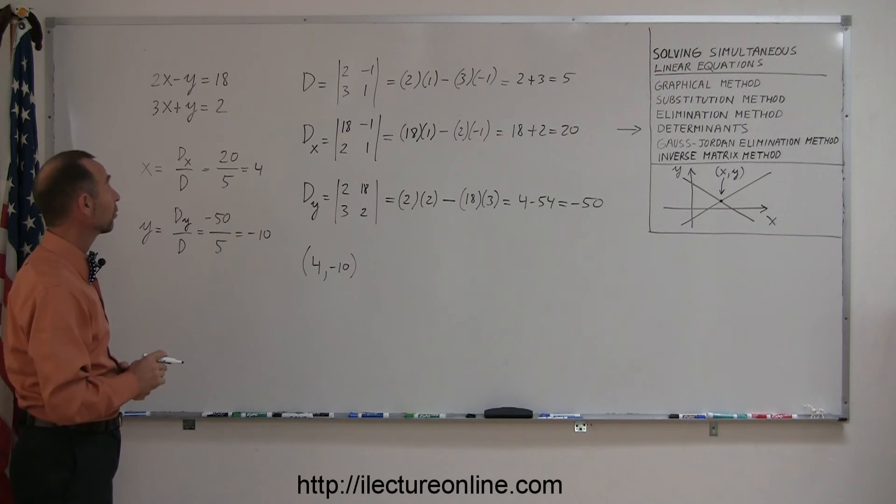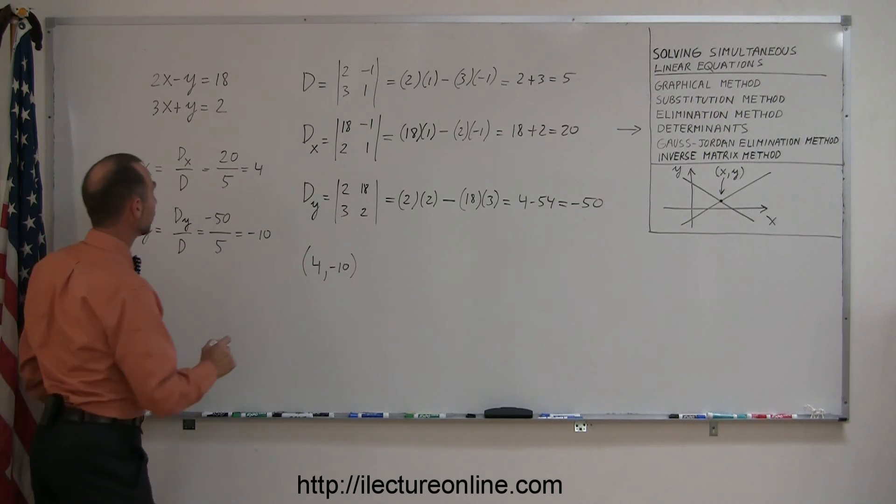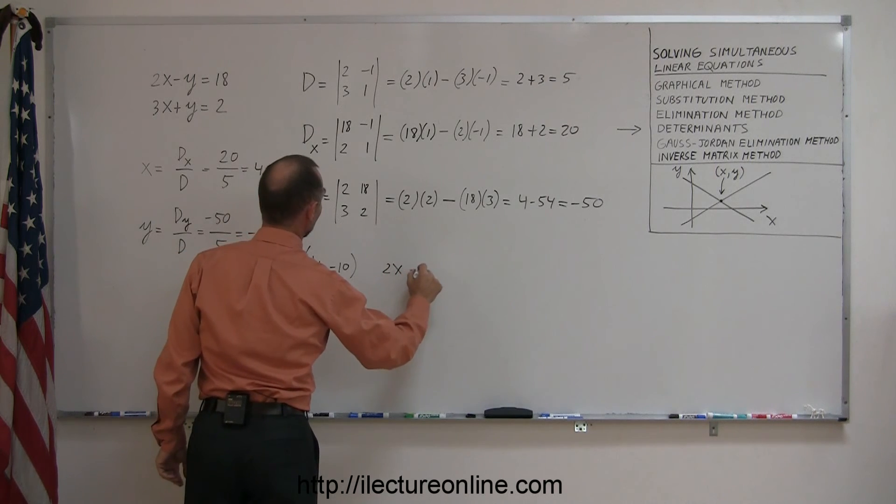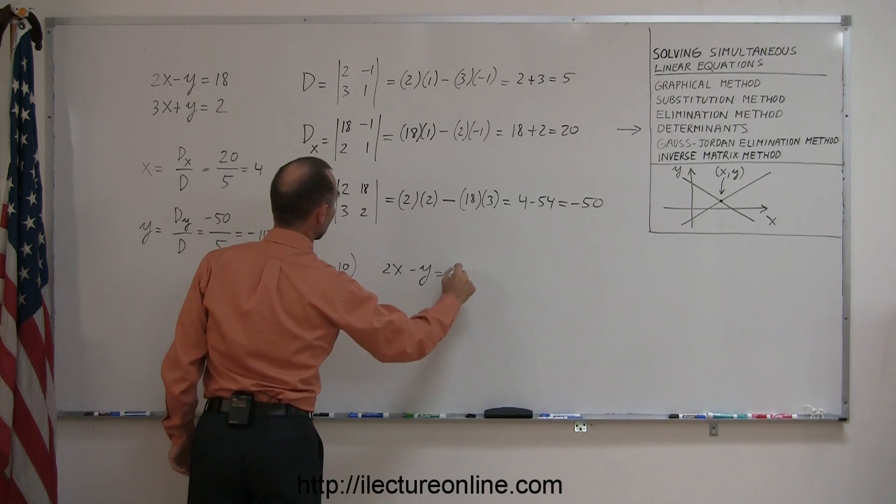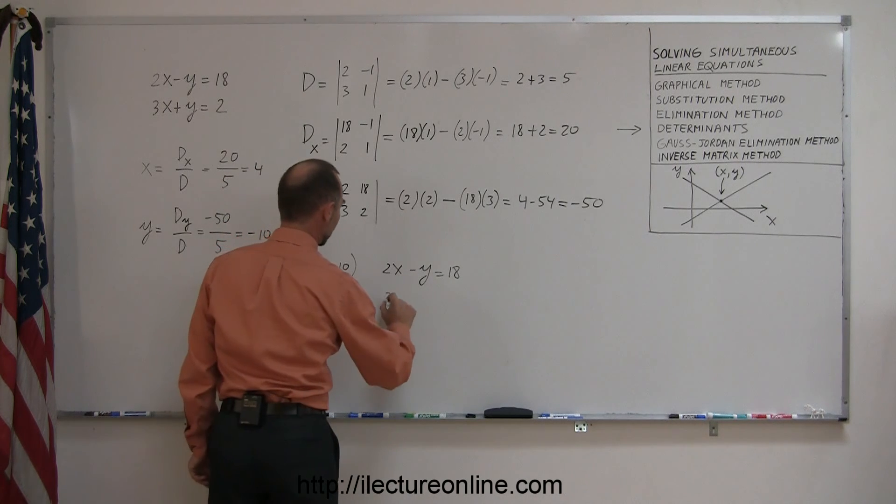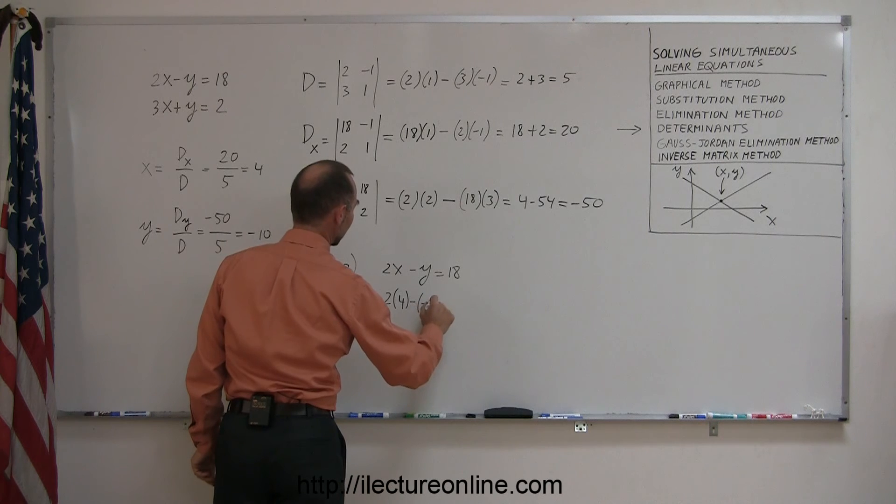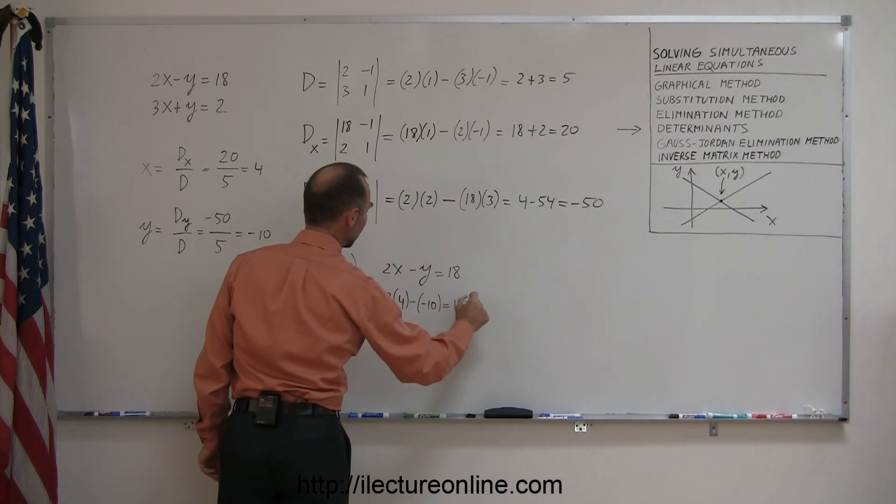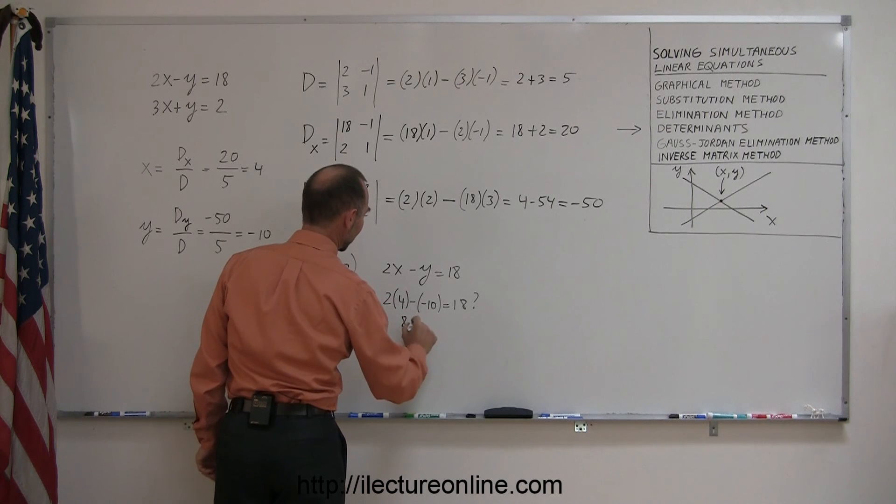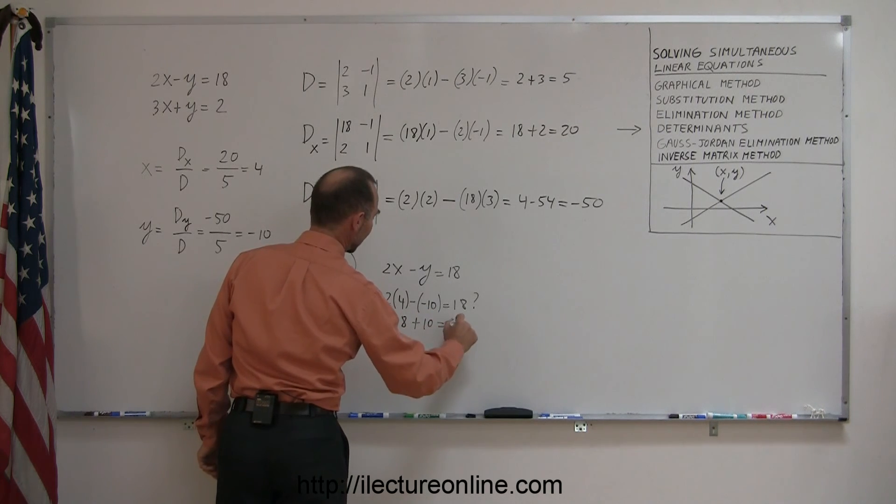To make sure we did this correctly, we'll plug these values back in the original equations, so we can take 2x minus y equals 18. Let's plug in 4 for x, negative 10 for y, so 2 times 4 minus and minus 10, is that indeed equal to 18, and that 2 times 4 is 8, minus times a minus is plus, and it looks like, yes that's correct.